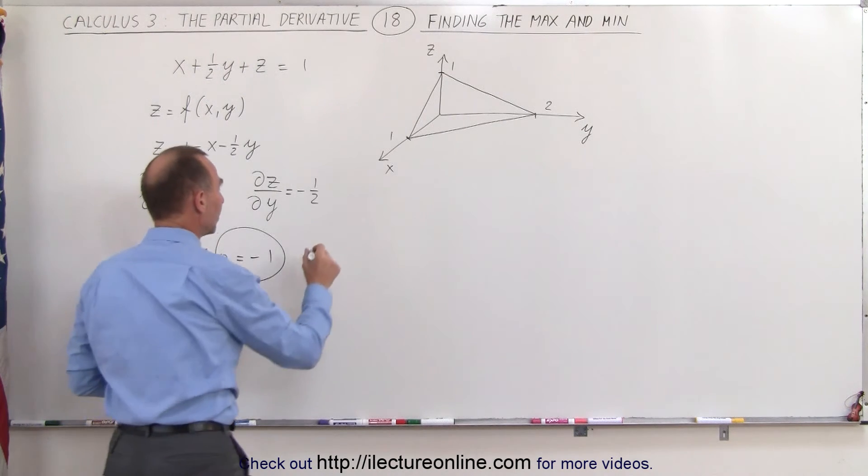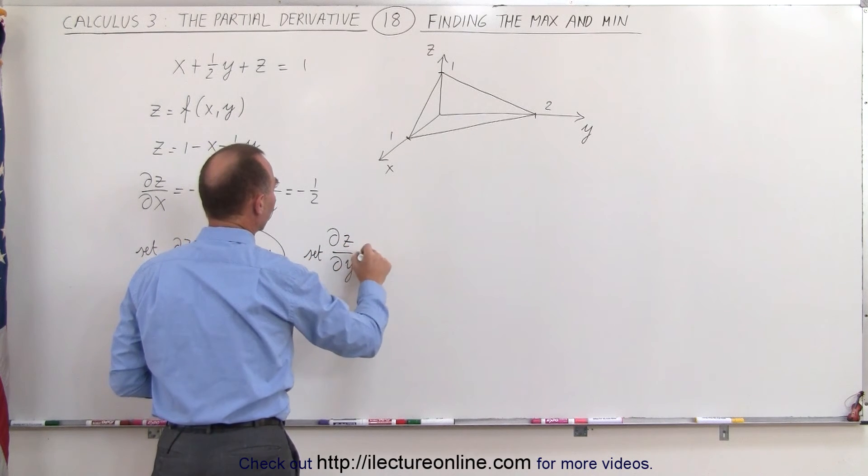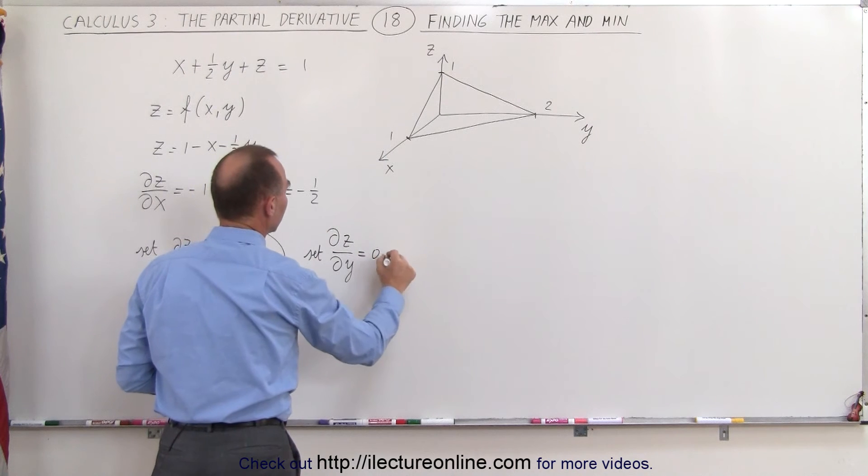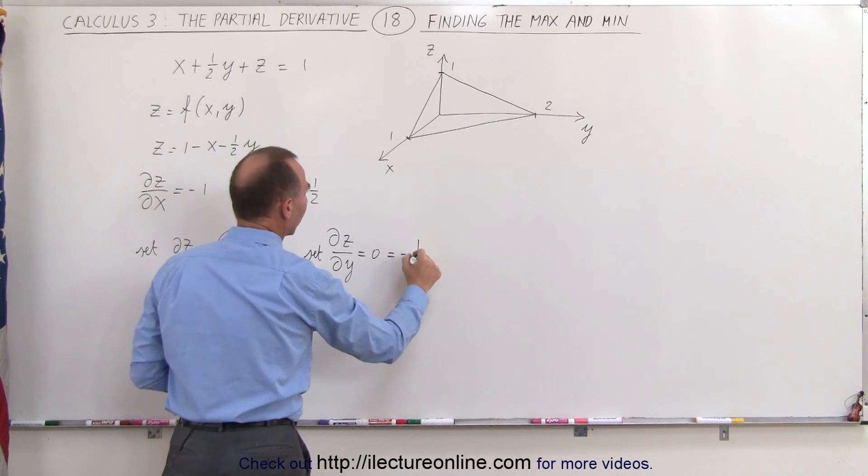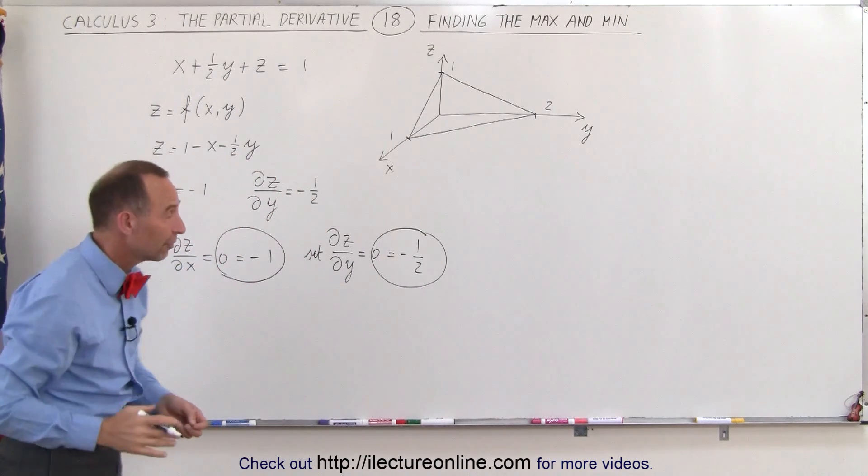If we do the same for the other partial derivative, we're going to set the partial of z with respect to y equal to 0, and then we set it equal to what it is equal to, minus one-half. Again, we realize here that 0 cannot equal negative one-half.